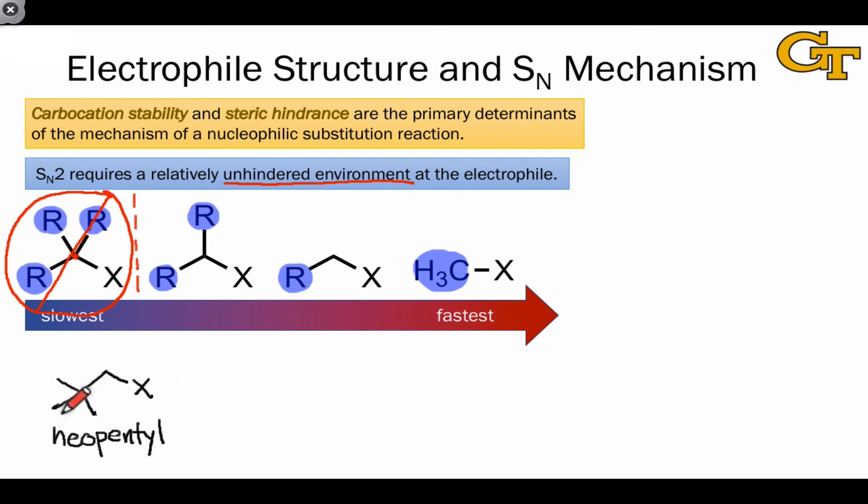The three carbons linked to this beta position form a kind of shield that prevents the electrophilic carbon from reacting. And so here again, the neopentyl halides or pseudohalides do not react in SN2 either.